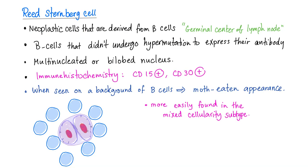The Reed-Sternberg cell is a neoplastic cell derived from the B cell. Where is the B cell? In the germinal center of the lymph node, as you know. B cells that didn't undergo hypermutation to express their antibodies are the RS cells — multinucleated, or could have a bilobed nucleus.